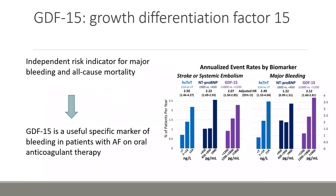GDF-15, growth differentiation factor 15, is another laboratory parameter with very good potential for routine analysis. It is currently promoted by Roche as a marker of bleeding in patients with atrial fibrillation on anticoagulant therapy. A recent study published by Berg in Circulation compared three main laboratory parameters — cardiac troponin T, NT-proBNP, and GDF-15 — in patients after stroke or embolism, in comparison to major bleeding patients with atrial fibrillation. The outcome of the study proved high-sensitivity troponin T, NT-proBNP, and GDF-15 as independently associated with a high rate of stroke and high rate of bleeding. Among individual laboratory parameters, high-sensitive troponin T showed the most significant response.